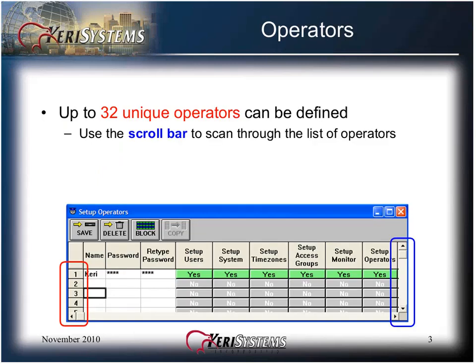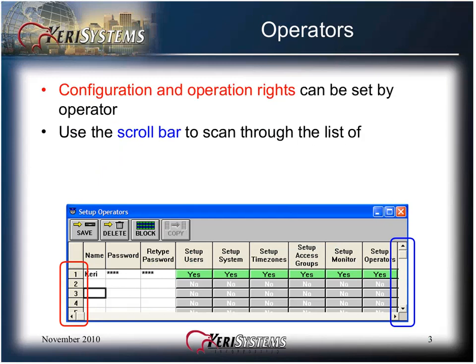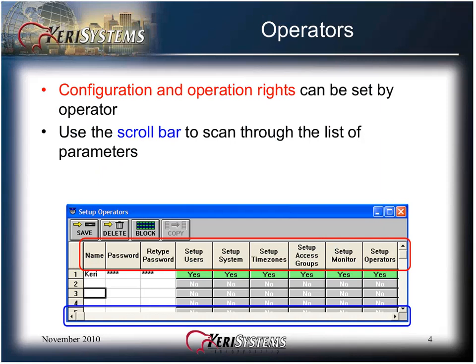Up to 32 unique operators can be defined. Use the scroll bar on the bottom or right side of the window to scan through the list of operators. Configuration and operation rights can be set by operator. Use the scroll bar to scan through the list of parameters to be set.